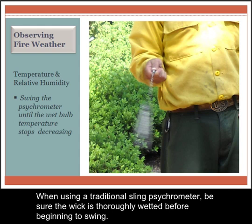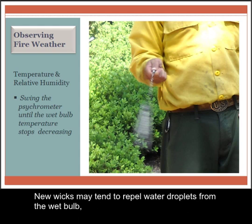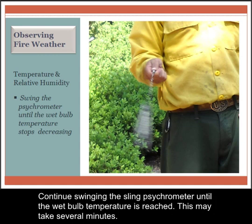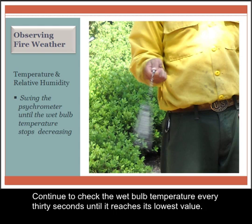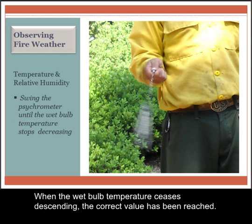When using a traditional sling psychrometer, be sure the wick is thoroughly wetted before beginning to swing. Distilled water is preferred. Bottled water is the next best alternative. New wicks may tend to repel water droplets from the wet bulb, so the observer may need to gently rub the wick against the side of the water bottle to eliminate air pockets. A soaked wick is the goal. Continue swinging the sling psychrometer until the wet bulb temperature is reached. This may take several minutes. Continue to check the wet bulb temperature every 30 seconds until it reaches its lowest value. In very dry conditions, it may be necessary to re-wet and continue swinging until the lowest value is attained.